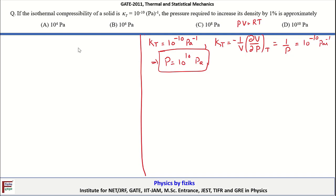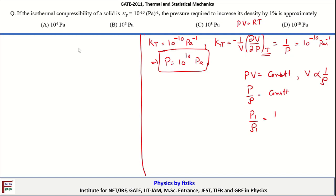For the isothermal process, PV = constant. Since volume is proportional to 1/ρ, we have P/ρ = constant, which means P1/ρ1 = P2/ρ2. From this, we can write P2 = (ρ2/ρ1)·P1. A 1% increase in density means ρ2 = ρ1 + ρ1/100.